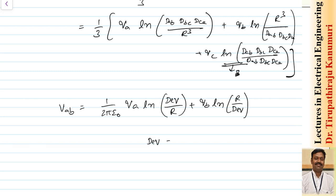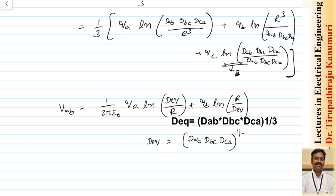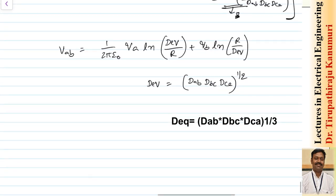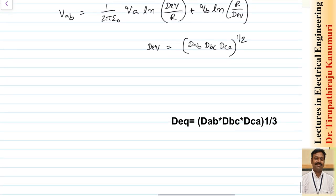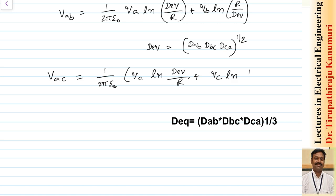This simplifies to V_AB = 1/(2π ε₀) × [Q_A · ln(D_eq / r) + Q_B · ln(r / D_eq)], where D_eq = (D_AB · D_BC · D_CA)^(1/3). This is the geometrical mean distance (GMD). Similarly, V_AC = 1/(2π ε₀) × [Q_A · ln(D_eq / r) + Q_C · ln(r / D_eq)].